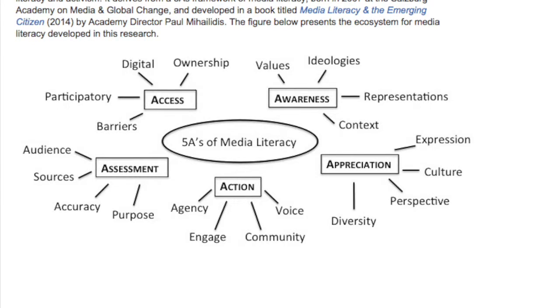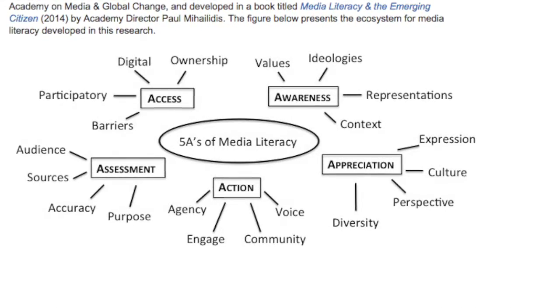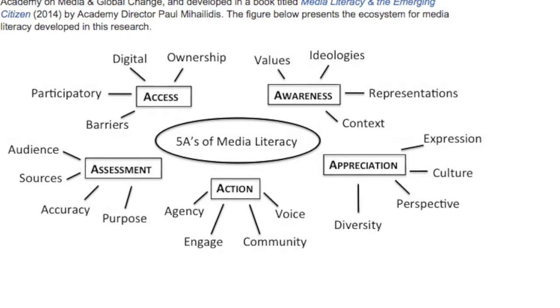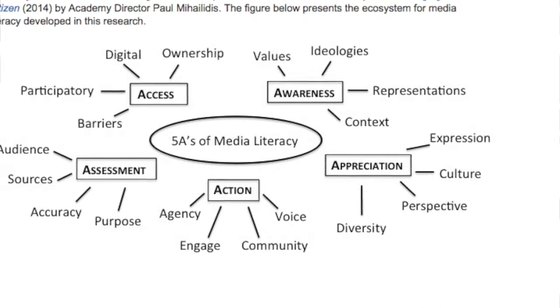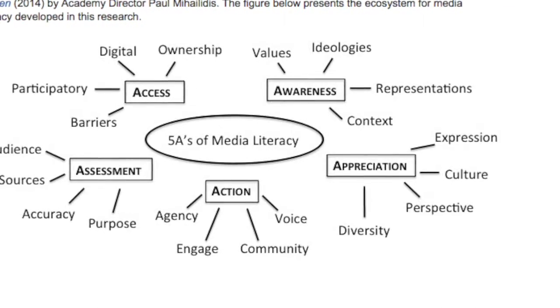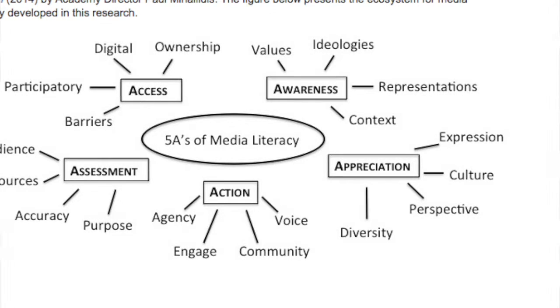The Salzburg Academy advocates what they call the Five A's of media literacy. The first A is access — whether it be digital, ownership, participation, and barriers involved with access. The second A is awareness — values, ideologies, representations, and context. The third is appreciation — expression, culture, perspective, and diversity. The fourth is action — agency, engagement, community, and voice. And the fifth is assessment — the purpose, the accuracy, the sources, and the audience.